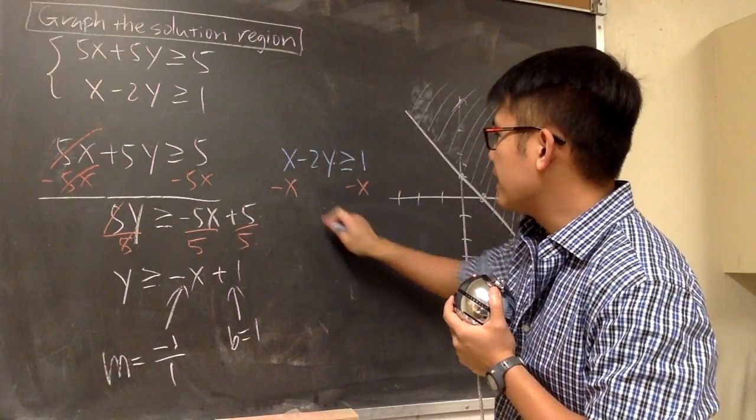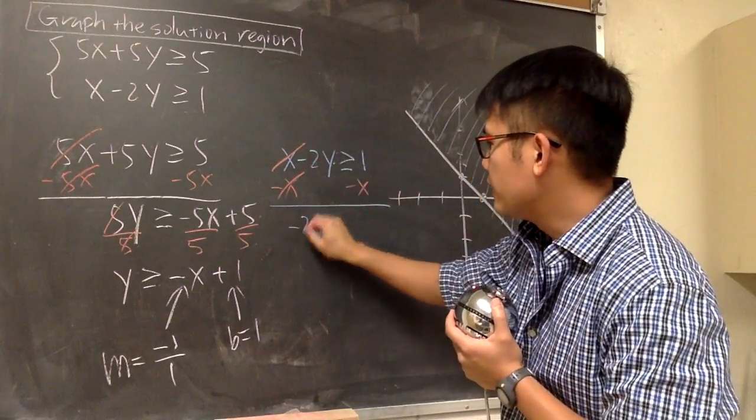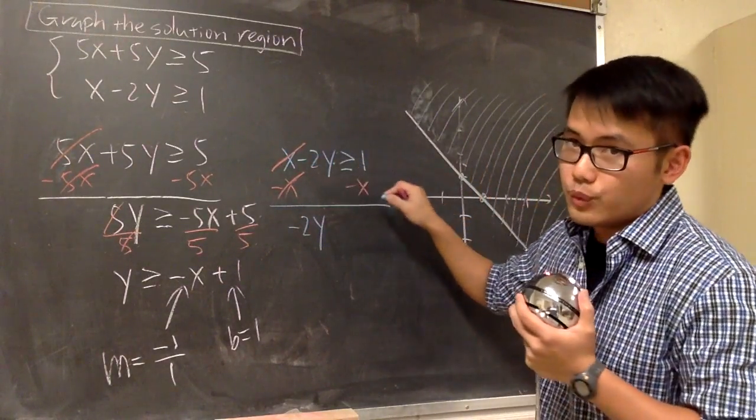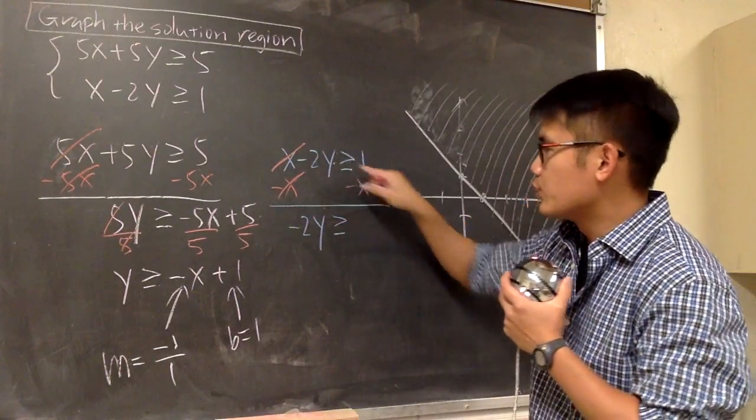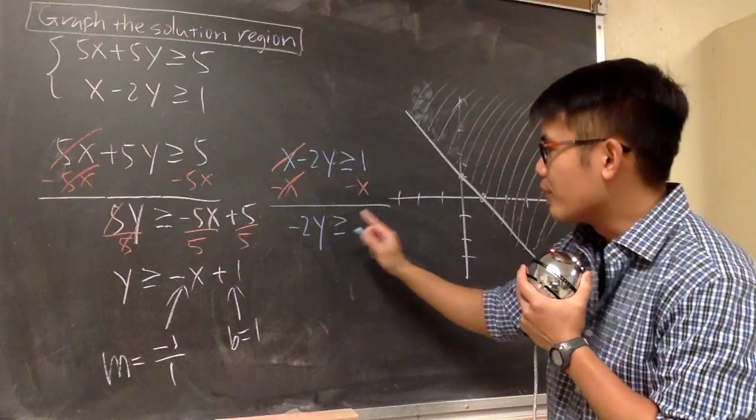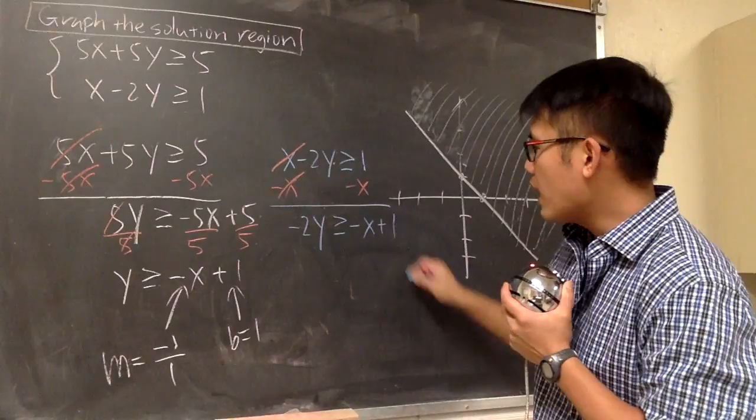That's minus x, minus x, cancel, cancel. And we see this is negative 2y. We just subtract the x, we don't have to switch the inequality. So still greater than or equal to, and then this is negative x plus 1.